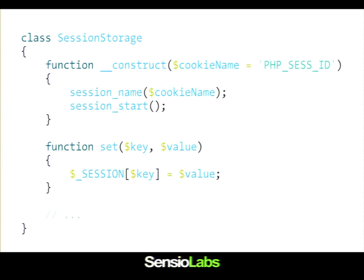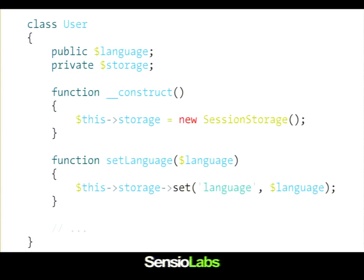Now I have two different classes — the session storage one and the user one. The user class needs a session storage to be able to save its information in the session. One way to do that is by creating a session storage object in the user constructor. So in the constructor, I create the session storage, and then in setLanguage, I'm storing the language in the session — language being the key, and the language passed to the method being the value.